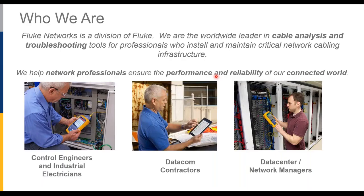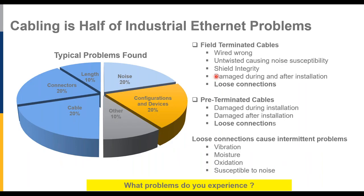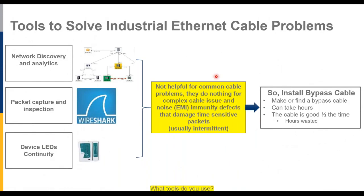Fluke Networks makes test equipment — not cable, not connectors, not installations. There's debate whether cabling is responsible for 50% or 80% of problems in industrial networks, but either way, cabling gets blamed a lot. A good approach is using a cable analyzer to prove whether it is or isn't the cabling. If it is, it'll tell you where; if it's not, hand the ball back to the applications group.